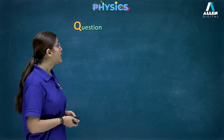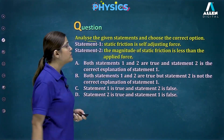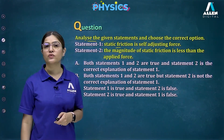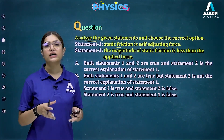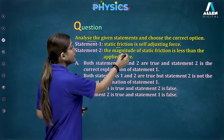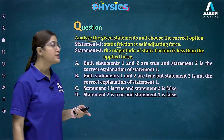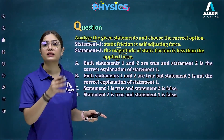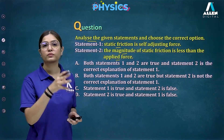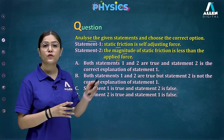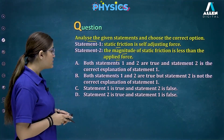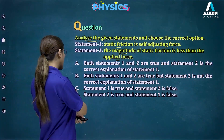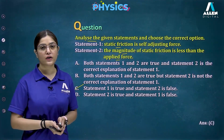Next question: analyze the given statements. Statement one: static friction is a self-adjusting force — true. Statement two: the magnitude of static friction is less than the applied force — false, because static friction is greater than the applied force, which is why the object remains at rest. Statement one is true and statement two is false. The correct answer is option C.